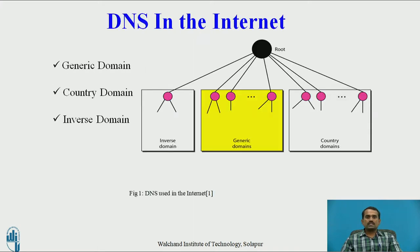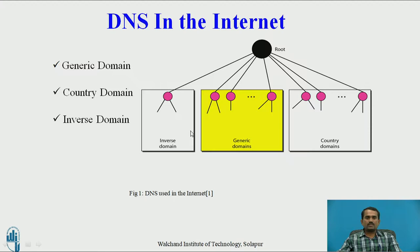Why do we have to use DNS in the internet? DNS — we have already discussed the DNS domain name system concept in the previous lecture. If the user has stored a huge amount of data in a single system, searching data based on client requests may cause problems. For that, we have to use the DNS concept in the internet. Based on that, there are three types of DNS in the internet: generic domain, country domain, and inverse domain.